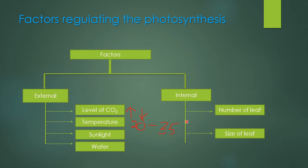Now the internal factors. As you know, the leaf is the main site of photosynthesis, so any feature related to the leaf can affect the rate of photosynthesis. The first one is the number of leaves. With the increase in number of leaves, the rate of photosynthesis will be increased — there is a direct proportional relationship. With the increase of leaf number, the rate of photosynthesis increases.